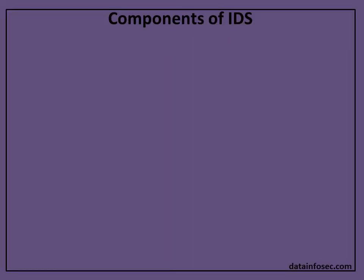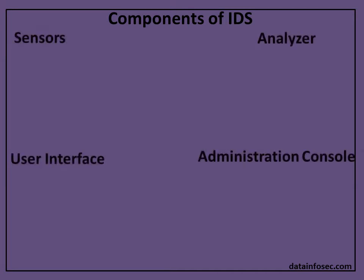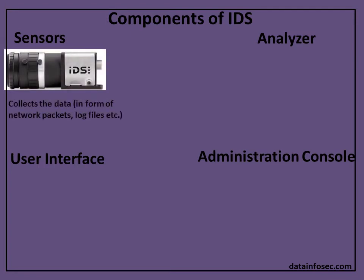The components of IDS are: sensor, analyzer, user interface, and admin console. The sensor collects data, which can be in the form of network packets, log files, and other related items. It transfers all the data to the analyzer to further analyze and determine intrusive activity.